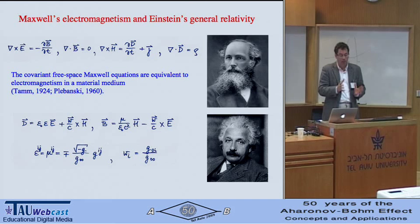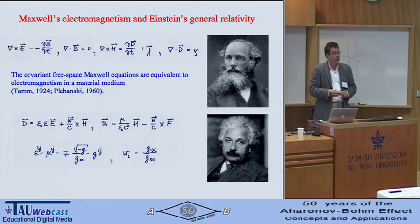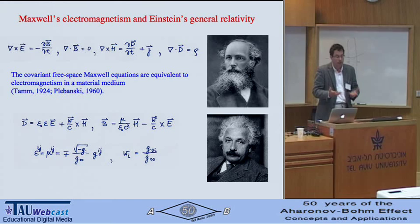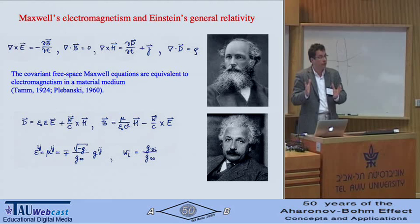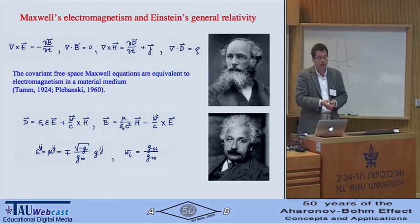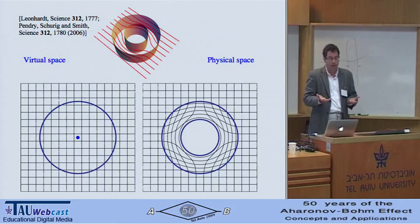Maxwell's equations in a general geometry or in generalized coordinates can be understood as the effect of a medium where Maxwell's equations are valid as written. The material occurs in the constitutive equations, generalizing a medium that tells you how the electric field is related to the dielectric displacement. Therefore, if you have a geometry that occurs as a material medium—or vice versa, if you want to create a geometry—that recipe tells you which epsilon and mu you need to make it happen.